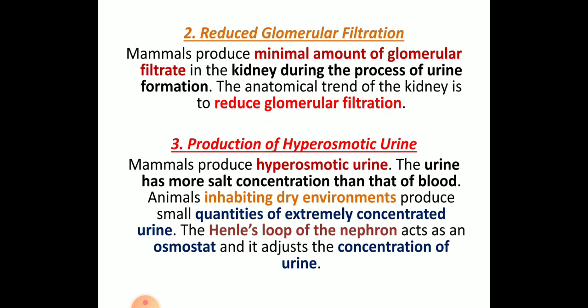Next, reduced glomerular filtration. In the structure of the nephron, glomerular filtration takes place. Mammals produce a minimal amount of glomerular filtrate because the water present within the body is reabsorbed to reduce glomerular filtration. The anatomical structure of the kidney, compared to different types of animals, shows reduced glomerular filtration.